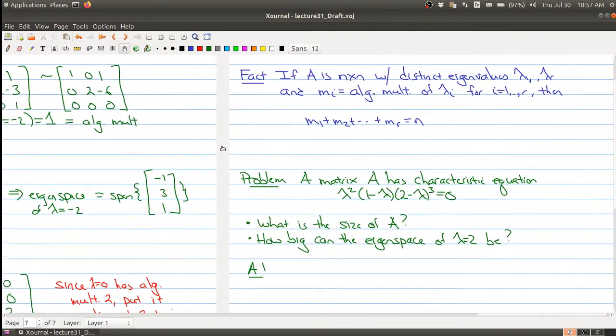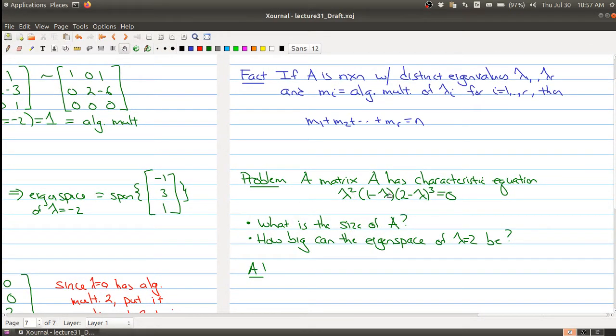And so the answer to the first part is pretty straightforward. You're just taking all the multiplicities and you're summing them up. So the multiplicity of 0 is 2, the multiplicity of 1 is 1, the multiplicity of 2 is 3. So A is a 6 by 6 matrix.